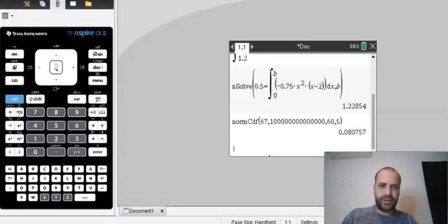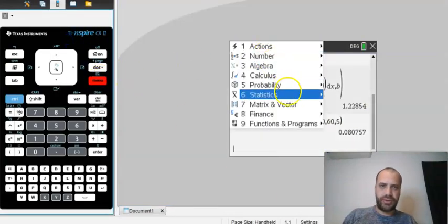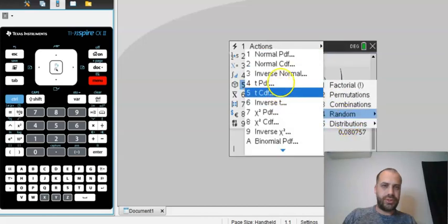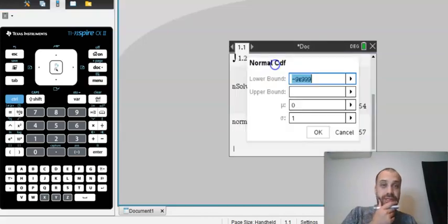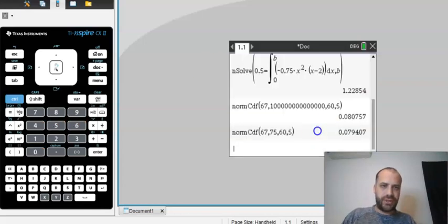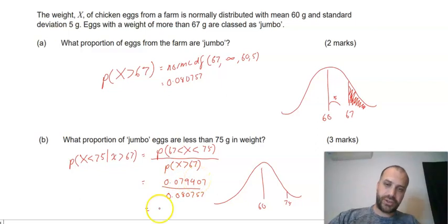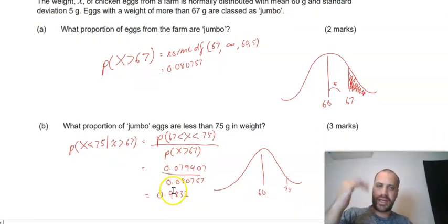Now we already know the probability that x is greater than 67. We figured it out up there, 0.080757. What we need now is this numerator, the probability that x is between 67 and 75. So back to our calculator, menu, probability, distributions, normal CDF. We're going between 67 and 75 of our egg distribution, which is 60 and 5. And we get 0.079407. So I write that there, I do the division, I'll get 0.9832. And that's it.